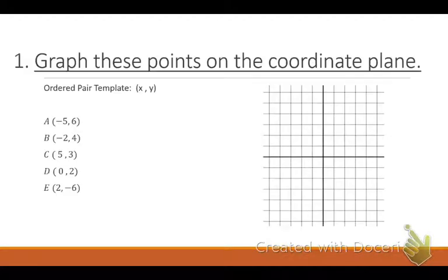I'm hoping this looks familiar — how to graph points on a coordinate plane. There are two things I want to teach you. There's an X and a Y axis. Remember, the X goes from left to right. Pull out your red pen and label that as the X axis because it goes left and right. You always want to label the X first.